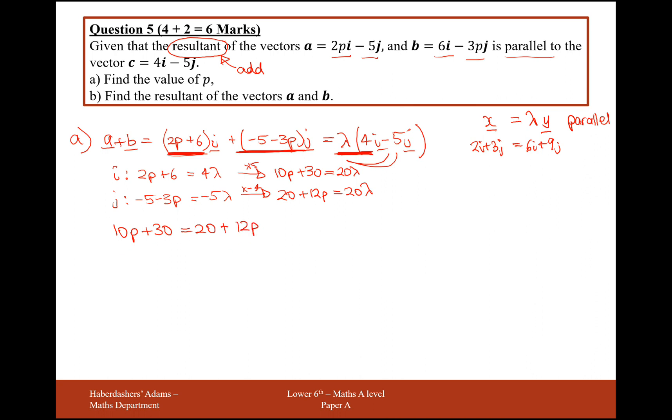So now I can set these two things equal to each other. So 10p plus 30 equals 20 plus 12p. So taking things over to each side, 10 equals 2p. So p equals 5. Great, we only need that part for p. We don't need to work out lambda.